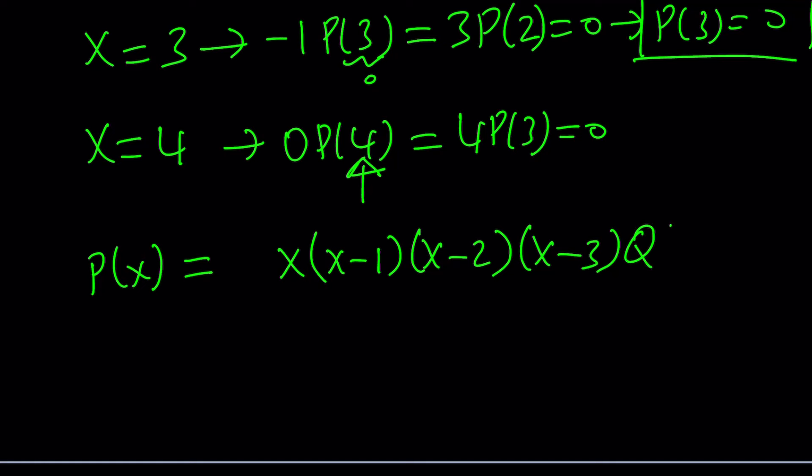Instead of that, we're just going to put Q of X as a polynomial. Now, Q of X could be a constant, but we don't know yet. So, the next thing we're going to do is to find Q of X if we can. To find or to get an idea, at least, about Q of X, we could go ahead and substitute this into our original equation.